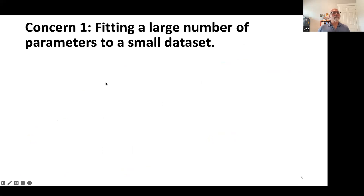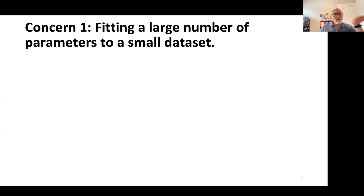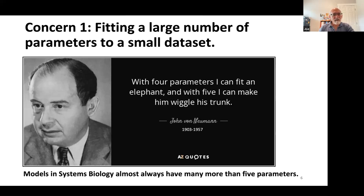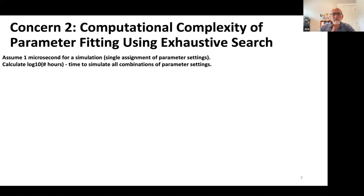Concern one: a large number of parameters with a small dataset. A classic example is genomics, where parameters are related to thousands of genes but observations might be only 50 to 100. There's a famous quote from von Neumann: with just four parameters I can fit anything. In our models we're going to have far more than four parameters — the Wolf model had 16 — and that's relatively modest.